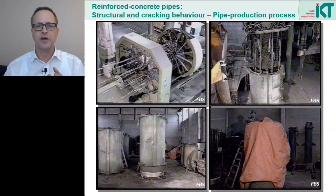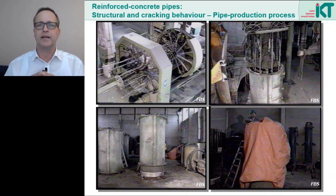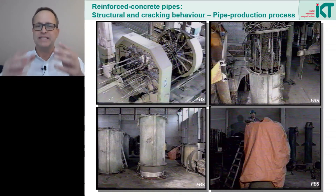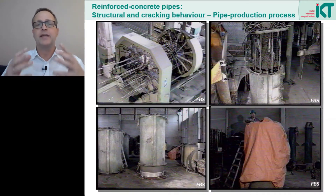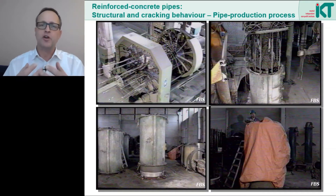Such a procedure is very common in concrete pipe production. But in the case of reinforced concrete pipes, this can lead to a considerable weakening of the bond between steel and concrete. There is a slight sagging of the fresh concrete when the formwork is removed, and that can create so-called reinforcement shadows — small cavities under the reinforcement in which there is no longer a sufficient bond between steel and concrete.